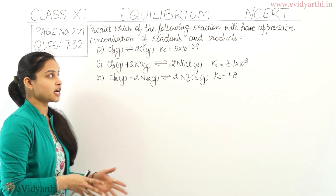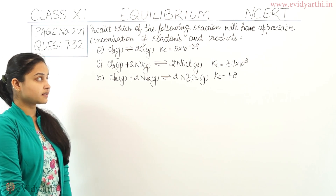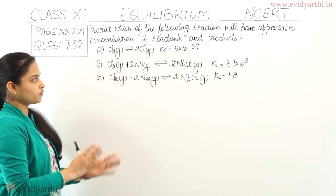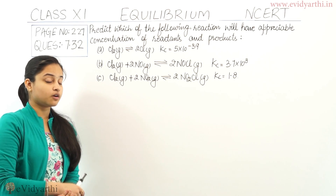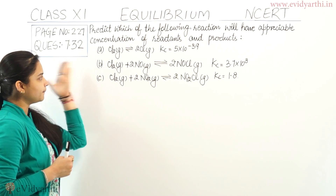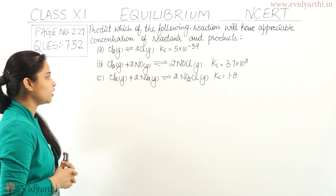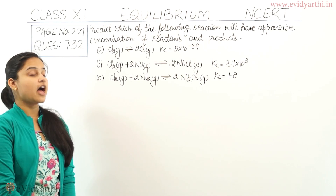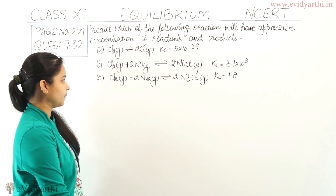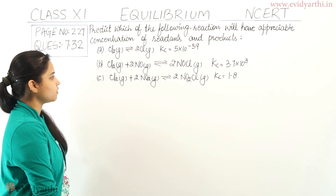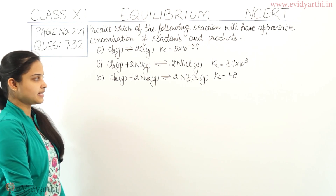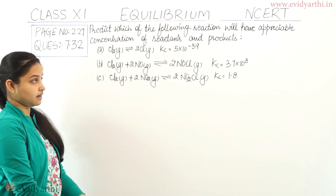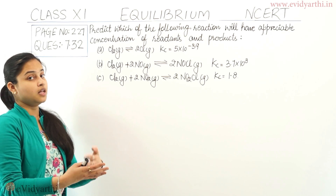The question is: predict which of the following reactions will have appreciable concentration of reactants and products. In reactions A, B, and C — the first reaction is Cl₂(g) forming 2Cl(g) with Kc = 5 × 10⁻³⁹. The second reaction has Kc = 3.7 × 10⁸. The third reaction has Kc = 1.8. So among these, which reaction has appreciable concentration of both reactants and products?